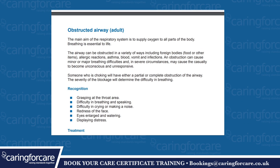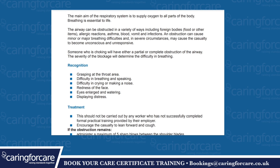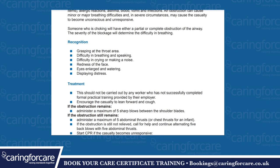Obstructed airway - adult. The main aim of the respiratory system is to supply oxygen to all parts of the body. Breathing is essential to life. The airway can be obstructed in a variety of ways including foreign bodies (food or other items), allergic reactions, asthma, blood, vomit and infections. An obstruction can cause minor or major breathing difficulties and in severe circumstances may cause a casualty to become unconscious and unresponsive. Someone who is choking will have either a partial or complete obstruction of the airway. The severity of the blockage will determine the difficulty in breathing.